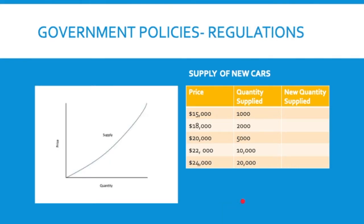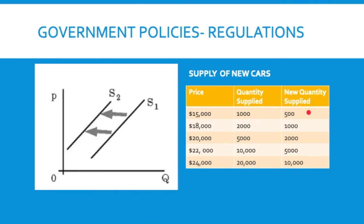The last government policy is regulations. Think about the supply of cars — not selling them but producing them. At $15,000 I'd produce 1,000 cars, all the way up to producing 20,000 at $24,000. If a new government regulation required environmental changes like emissions standards or better miles per gallon, it would cost more to produce the cars. My supply would go down — I'd be less willing to produce at all these different prices because I'd make less profit. My whole line would shift to the left, showing a decrease in supply.